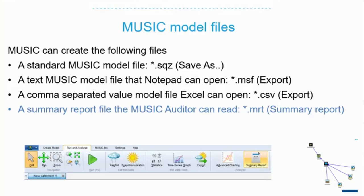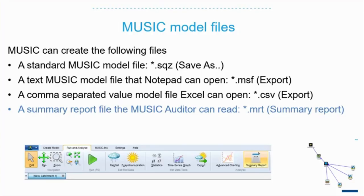Let's talk about generating a summary report. You can create a couple of different files in MUSIC. You can save the file as an SQZ file, and that's just a zip binary file which is a package of everything you need to run your model. It's got the parameters, and it's also got the climate file embedded in that. So that's your main file.